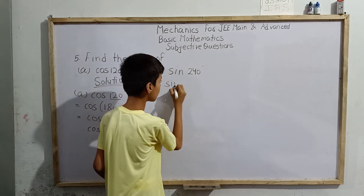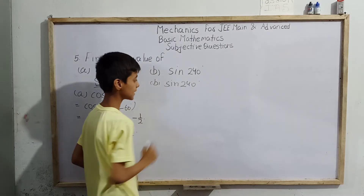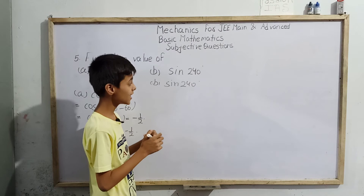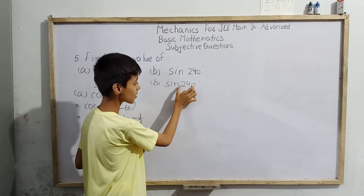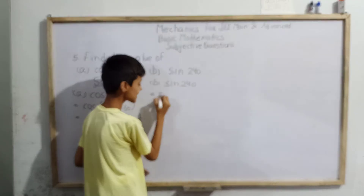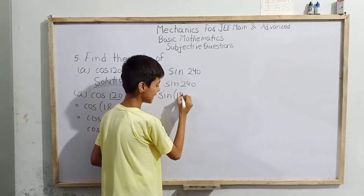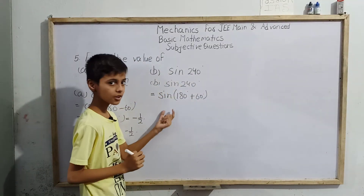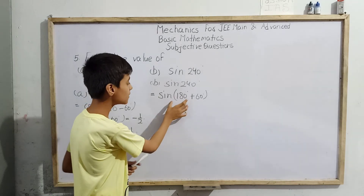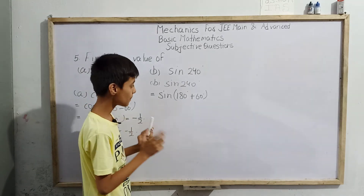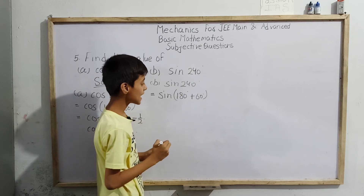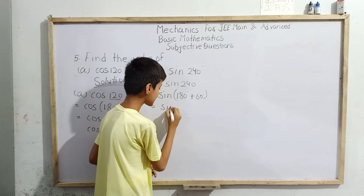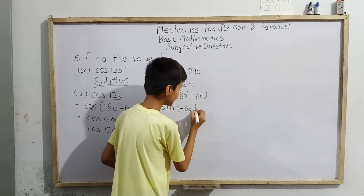Now for part (b): sin 240°. We need to express sin 240° in terms of 180°. We know that 180° + 60° = 240°, so sin 240° can be written as sin(180° + 60°). Using the identity sin(180° + θ) = −sin θ, we get −sin 60°.